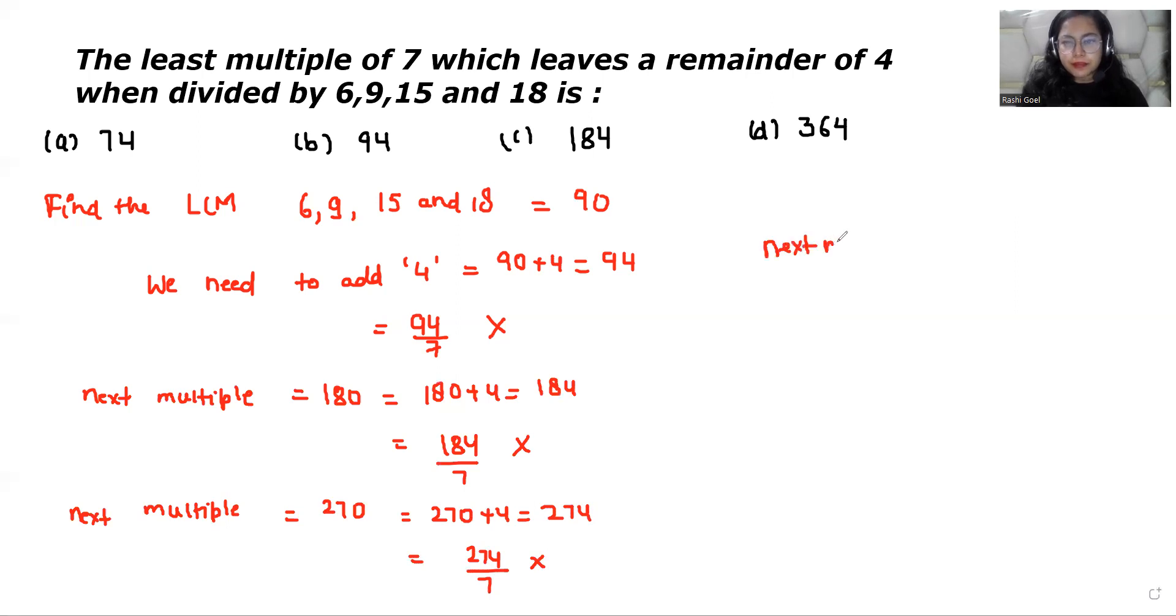Next multiple is 360. If I add 4, 360 plus 4 is 364. And 364 divided by 7 gives us 52. That means it is completely divided by 6, 9, 15 and 18.